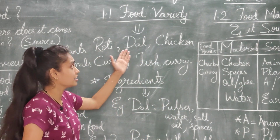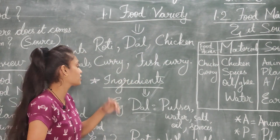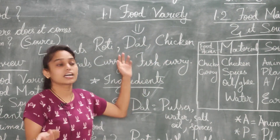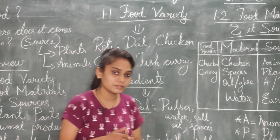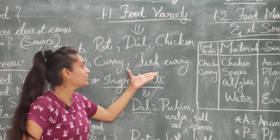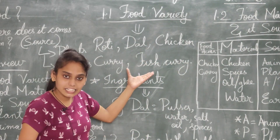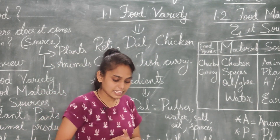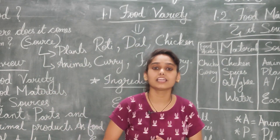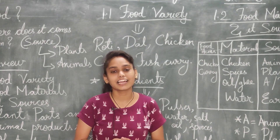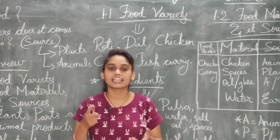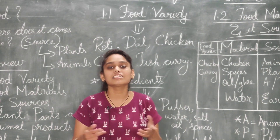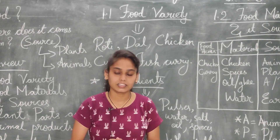Normally जो लोग खाते हैं, उसमें roti, dal, chicken curry, fish curry शामिल हैं। जो vegetarian होंगे वो दाल, roti और vegetables खाते हैं। ये सभी चीज़ें food varieties में आती हैं। जैसे पंजाब में लोग क्या खाते हैं? That is makai की roti और sarson ka saag। ये सब food varieties के examples हैं।